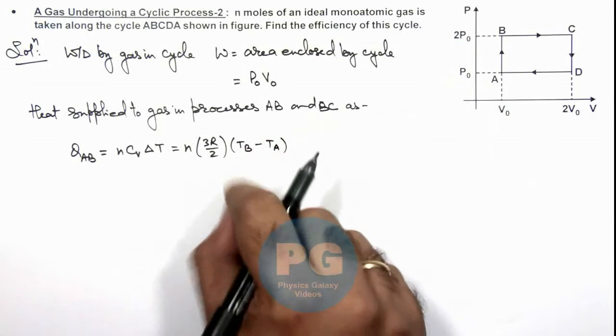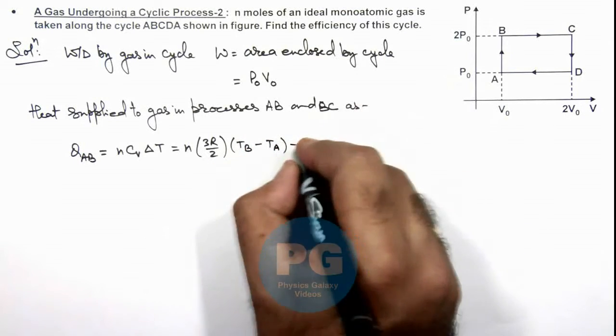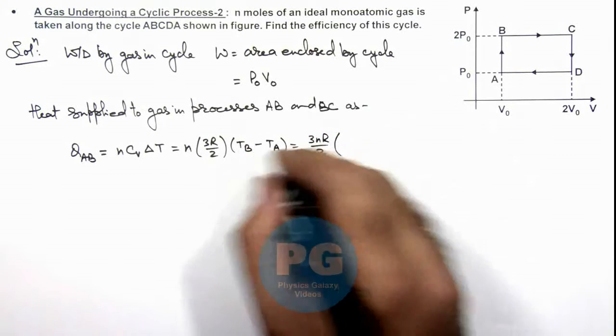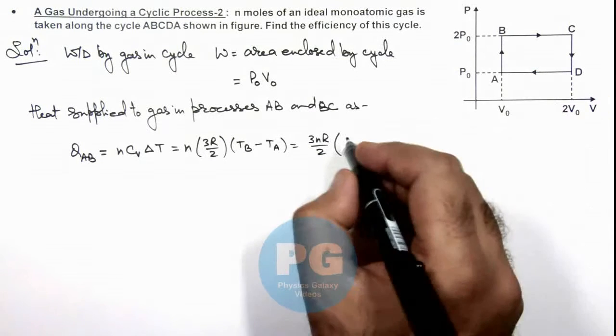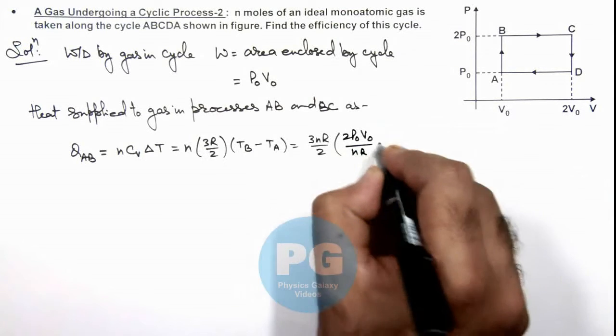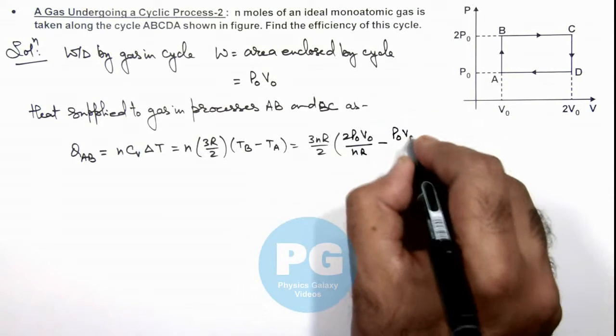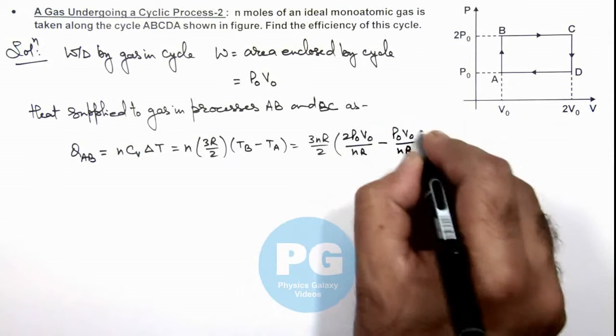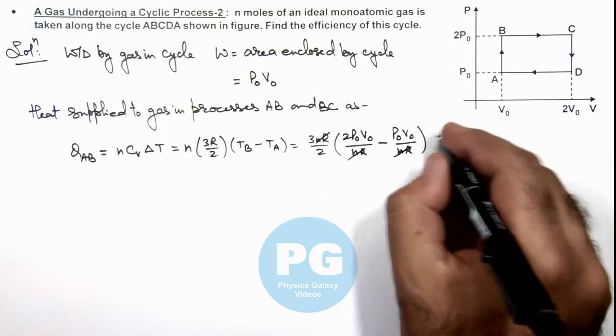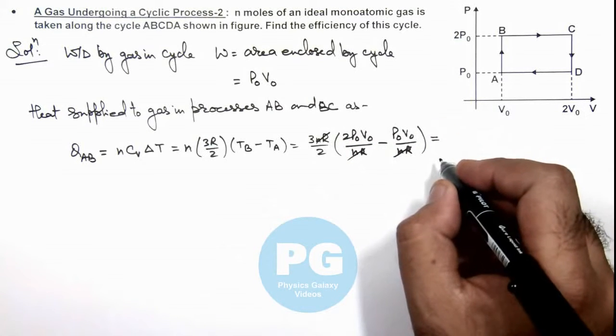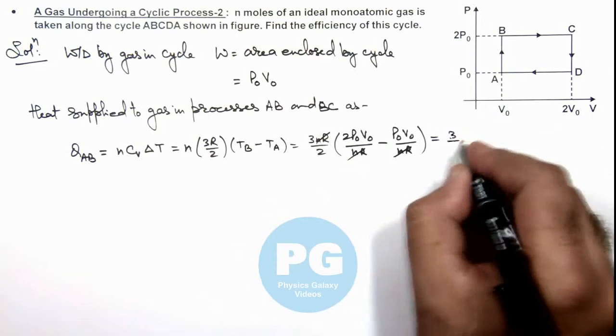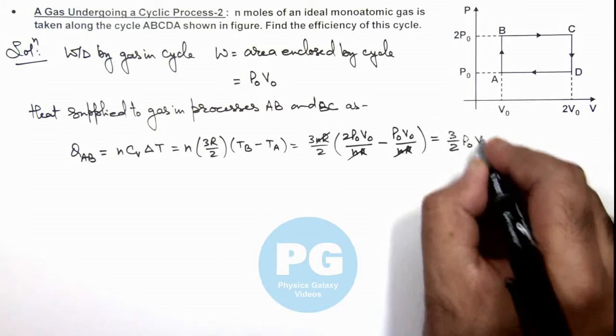So we can substitute the value of Tբ and Tₐ by gas laws. This is 3nR/2 multiplied by Tբ, we can write at point B is 2P₀V₀/nR, minus at point A it is P₀V₀/nR. So here nR gets cancelled out and this P₀V₀, so the final value of heat supplied in the process AB to the gas is 3/2 P₀V₀.